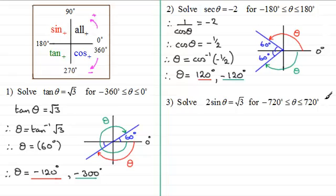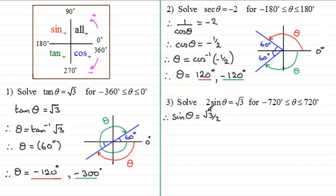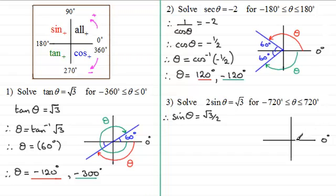For the third question, solve 2 sine theta equals root 3, for theta in the range minus 720 to 720 degrees. Dividing both sides by 2 gives sine theta equals root 3 over 2, which is a positive value. Drawing the quadrant diagram, sine is positive in the first and second quadrants, so we draw lines equally inclined to the horizontal in those quadrants.